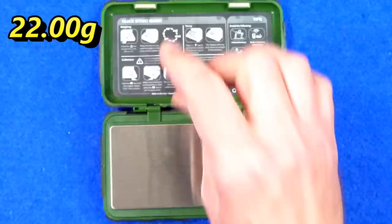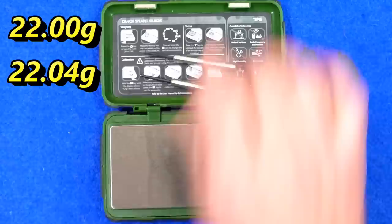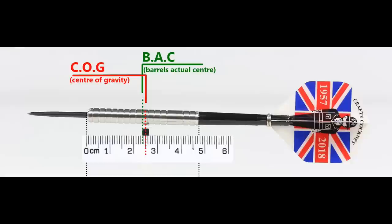That's 22 grams exactly, 22.04 grams, and 22.06 grams full set up 24 grams. With nothing attached, the balance is a little towards the front, and with the supplied set it moves slightly behind the center point. This is the balance with medium, in between short nylon stems and standard flights.